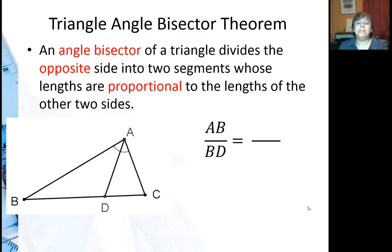So what does the triangle angle bisector theorem say? Well it says that an angle bisector of a triangle divides the opposite side into two segments, so this BC is the opposite side, whose lengths are proportional to the lengths of the other two sides, so these are the other two sides, AB and AC.